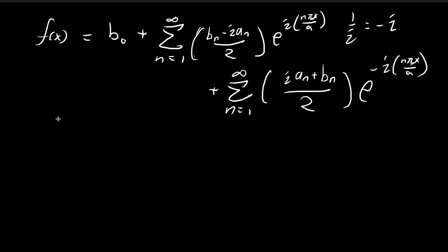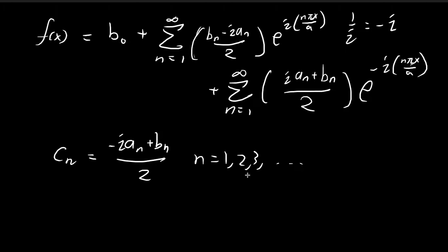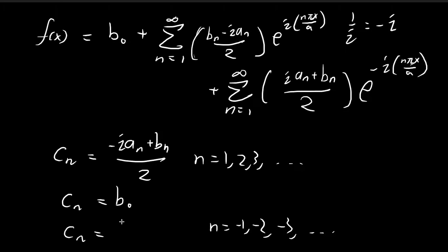We now define constants c_n. For n = 1, 2, 3, … to infinity, c_n = (−i·a_n + b_n)/2. For n = 0, c_0 = b_0. For n = −1, −2, −3, … to negative infinity, c_n = (i·a_{−n} + b_{−n})/2. The negative n subscript makes sense: substituting n = −1 gives a_1 and b_1, and n = −2 gives a_2 and b_2, so these terms are perfectly well-defined.